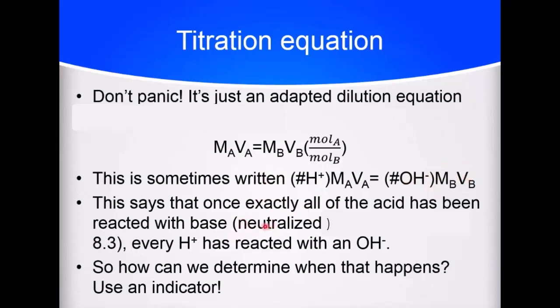All of this says that every single H+ that's present reacts with an OH-. And once every single H+ has reacted with OH-, we are at neutrality, pH 7. How can we figure, well pH 7 depending on what salt is involved technically. But for us, if we mix a strong acid with a strong base, we should end up with a neutral pH 7 solution. How can we figure out when that happens? Just like in the last lab, we will use an indicator.